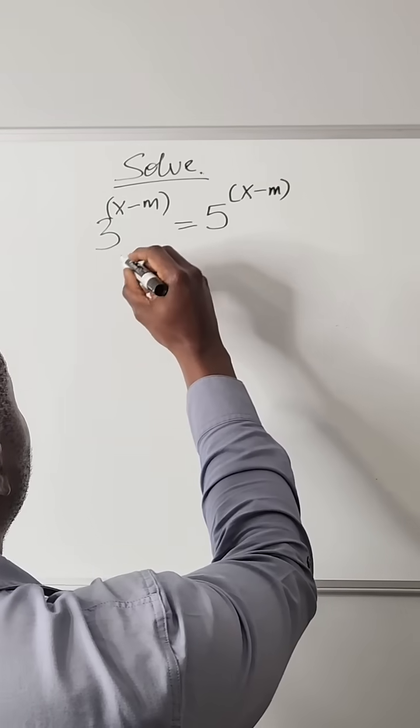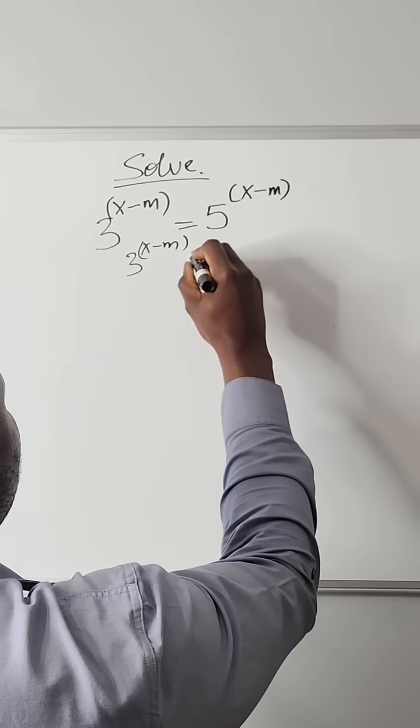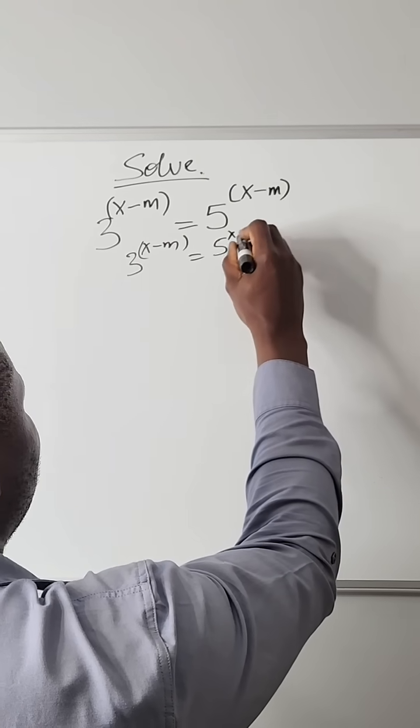So we have 3 raised to power x minus m equals 5 raised to power x minus m.